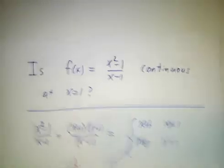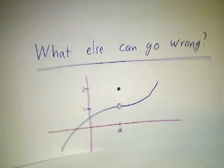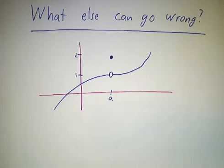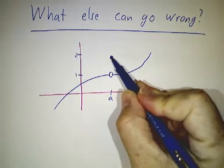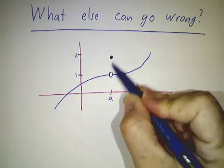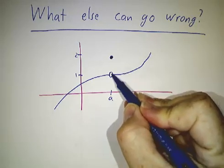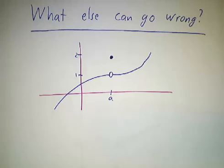Here are some other pictures of functions that are not continuous. Here, the limit from the left and the right agree. And the function has a value, it just happens to be different. The value of the function is different from the limit. It's not continuous.